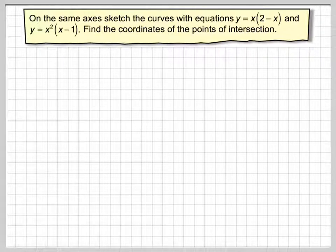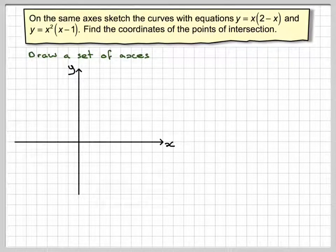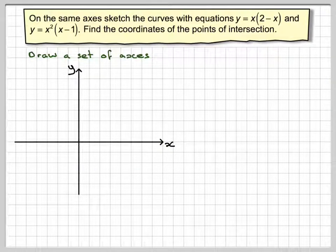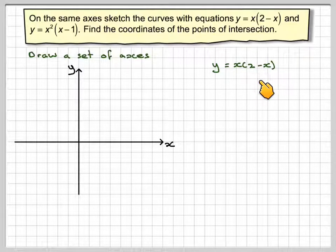First of all, draw a set of axes. Make sure you draw them with a ruler with an arrow at one end, labelling x and y. For y = x(2 - x)...